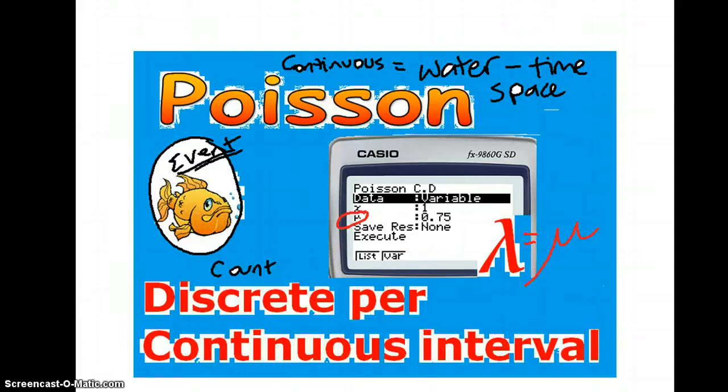The water that the fish is in is representing our continuous interval. So it's time or space. It's not a certain number of trials. It's in an hour, that kind of thing. So if normally the mean is four accidents in an hour, then in every 15 minutes, you'd expect one accident. But there could be a hundred.